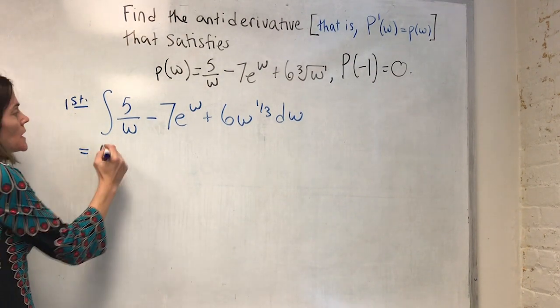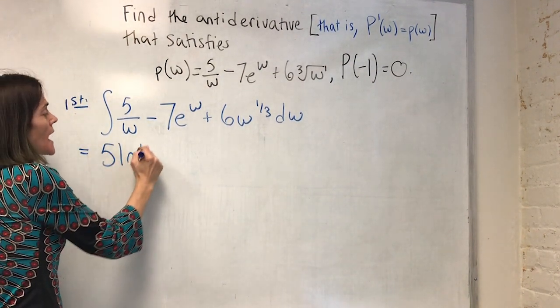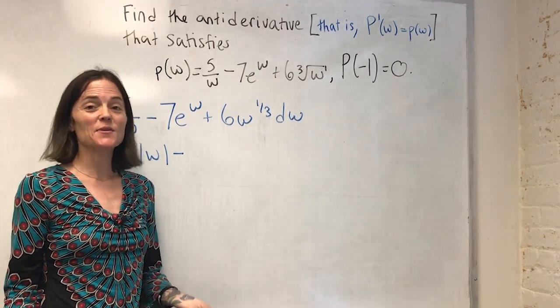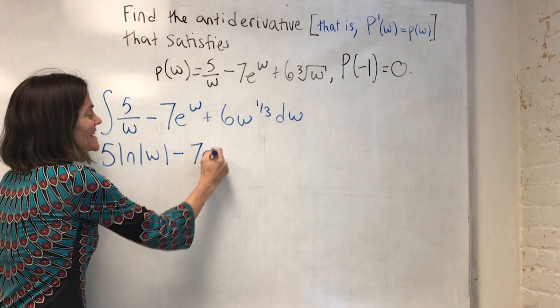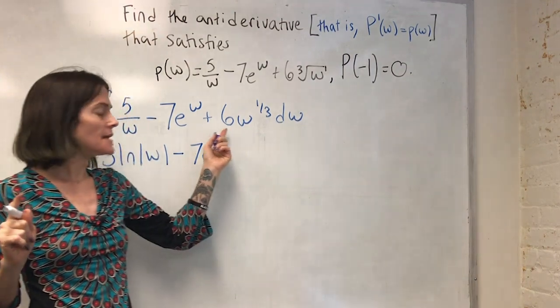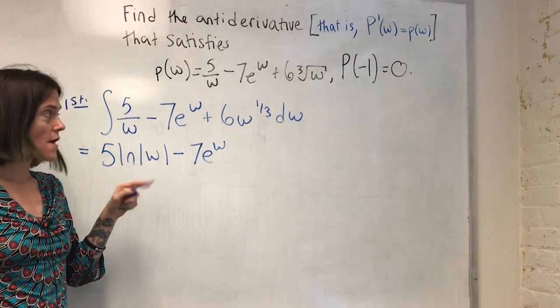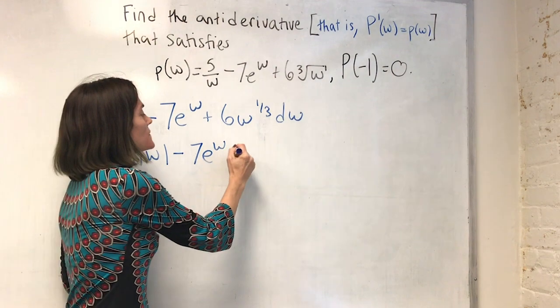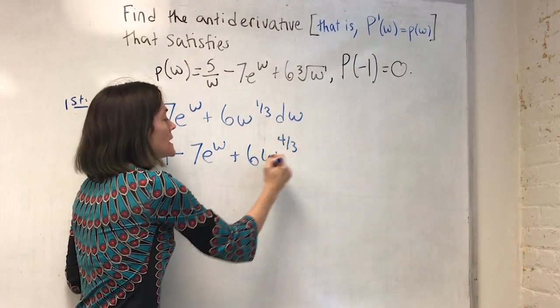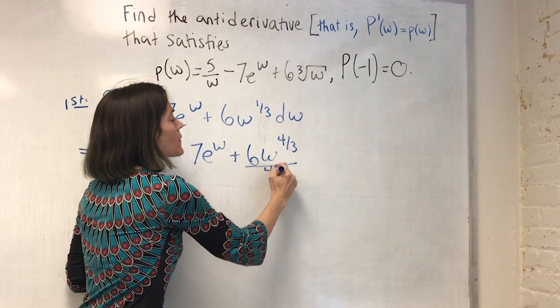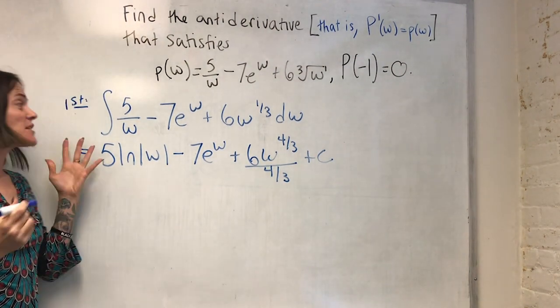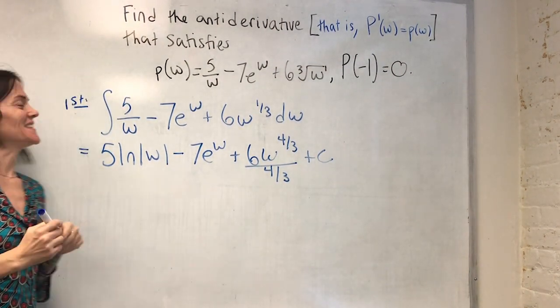Well, this is 5 ln absolute value of w minus when we integrate e to the w, we get e to the w. So 7 e to the w. And now this is the power rule. But it's the power rule for integrals or antiderivatives, where we add a power, this will be four thirds, divide by the higher power, and then plus c. This is our first step.